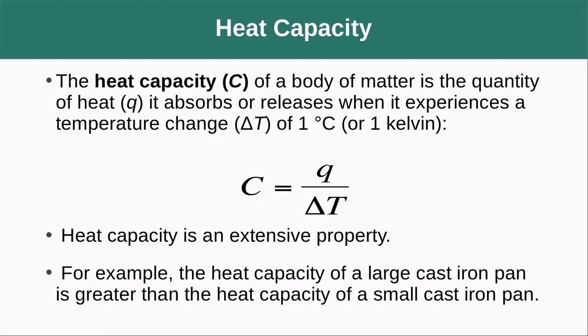The heat capacity of a body of matter is the quantity of heat it absorbs or releases when it experiences a one-degree temperature change (raised or lowered one degree Celsius). Heat capacity C equals heat divided by temperature change. Importantly, heat capacity is an extensive property — a cup of hot water and a pot of hot water at the same temperature will have different heat capacities, because the pot has more mass. As the system gets larger, the heat capacity gets larger.